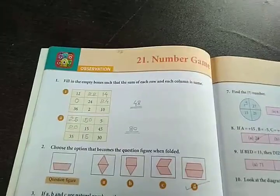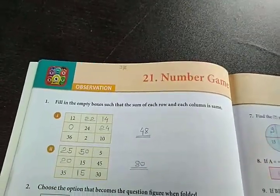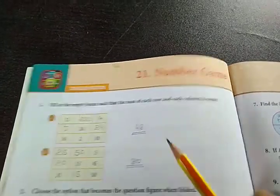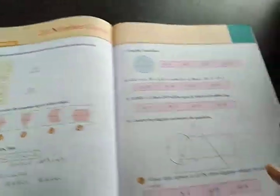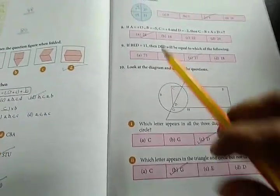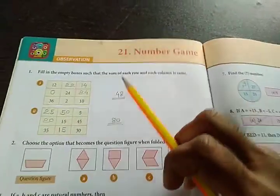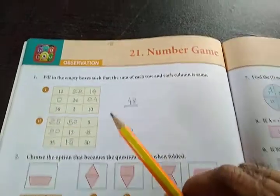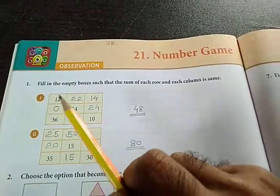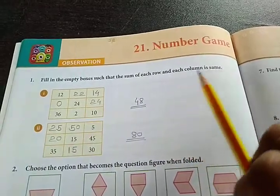So students, here we are on lesson number 21 of our 6th standard GK subject and this lesson is about the number game. On both pages, there are total 10 numerical questions asked to you and you have to choose the correct options from the given options. First question is, fill in the empty boxes such that the sum of each row and each column is same.